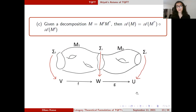This next axiom is very important. If we decompose the cobordism into two parts M₁ and M₂, we want TQFT to respect this decomposition. If the boundaries are mapped to their respective vector spaces, then M — the full cobordism from sigma₀ to sigma₂ — gives a linear map from V to U. We want this linear map to be G composed with F. So TQFT respects decomposition and composition of linear maps.